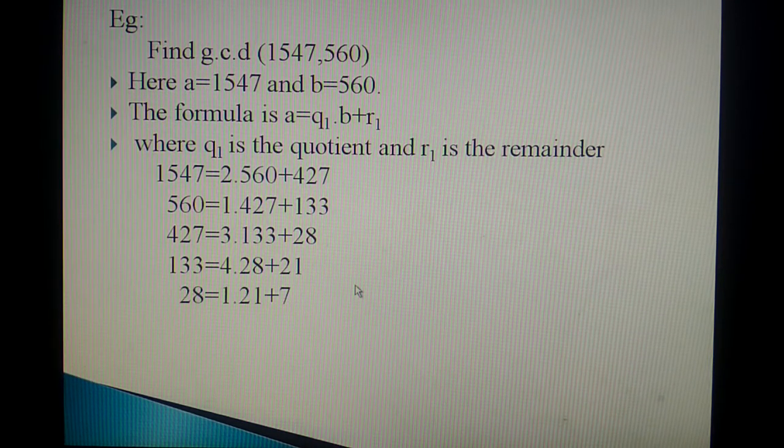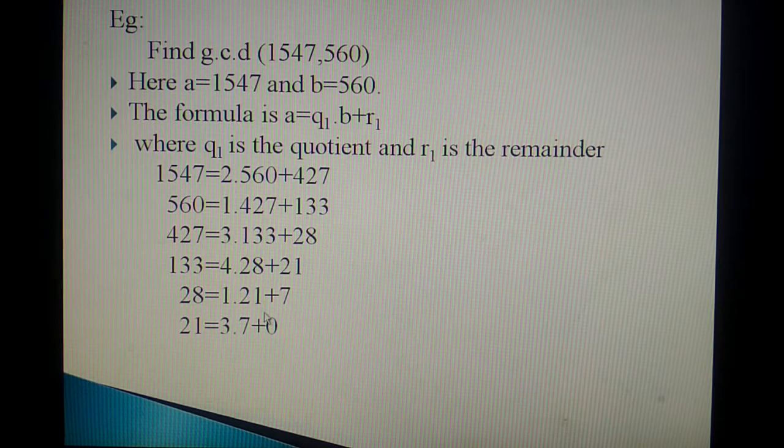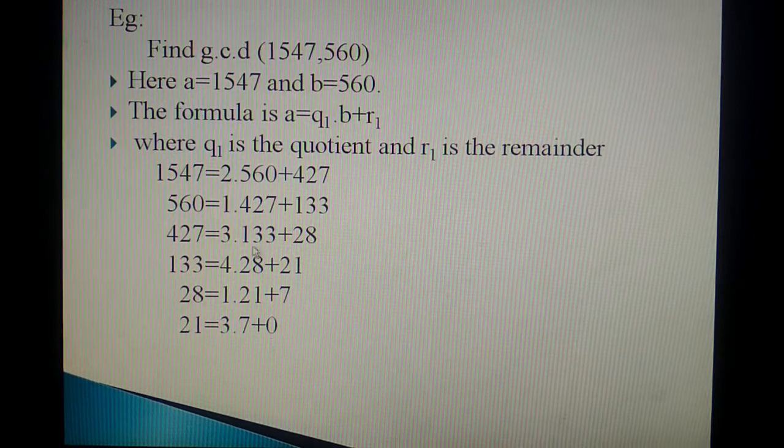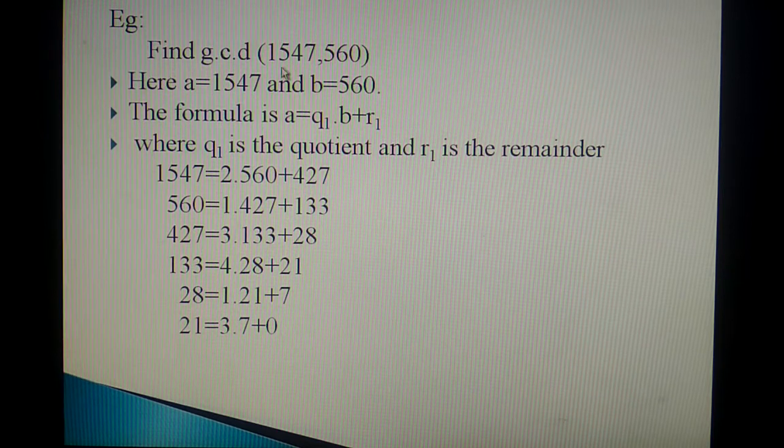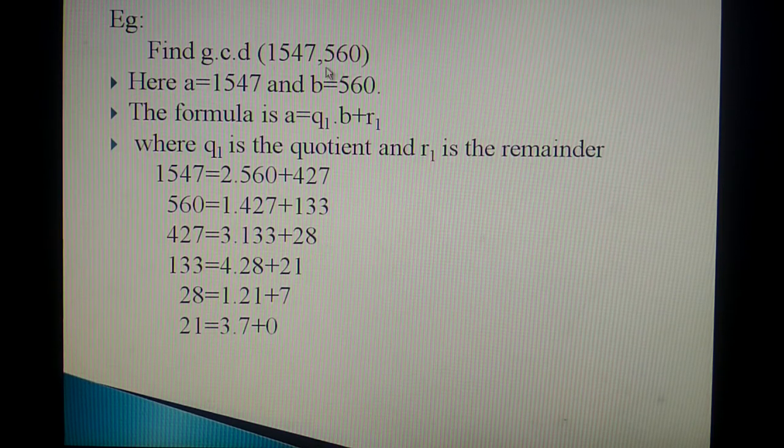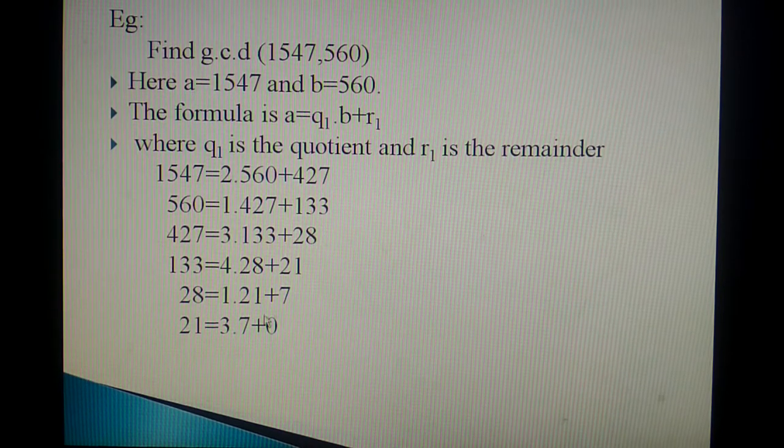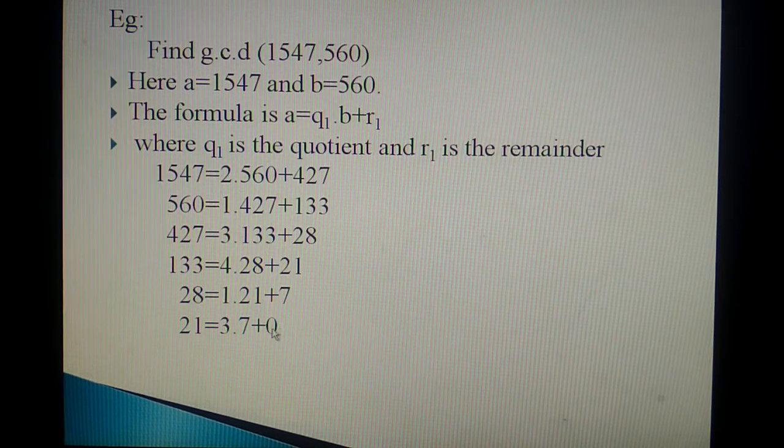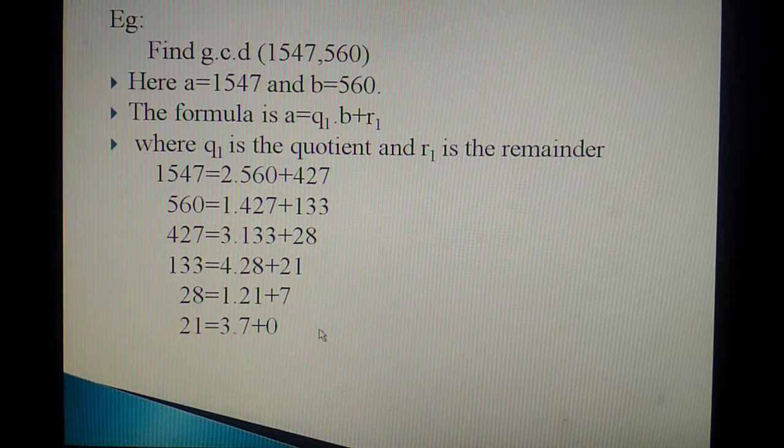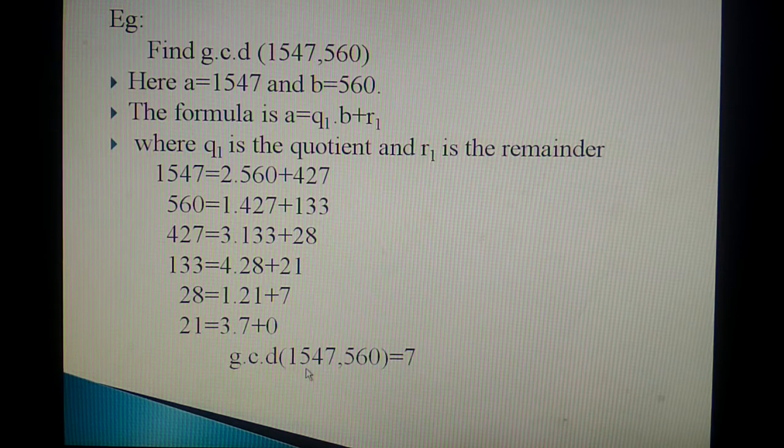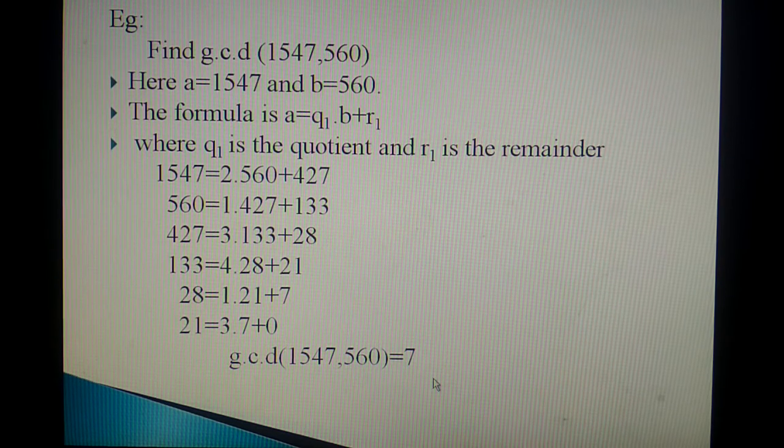Continuing this way, we are getting, you should work out up to you getting the remainder 0. When you are getting the remainder as 1, then these two numbers are relatively prime. So now you are getting the remainder as 0. The last step, remainder 0. Before that step, the remainder value is 7. So this is the GCD value for 1547 and 560. So GCD of this value is 7.